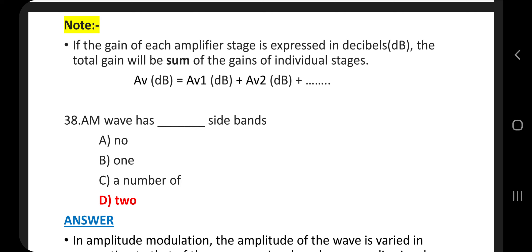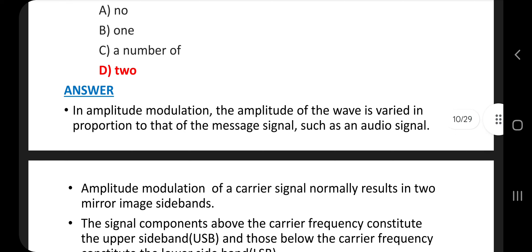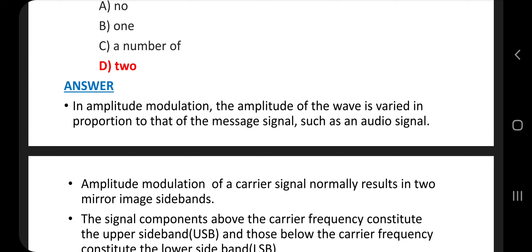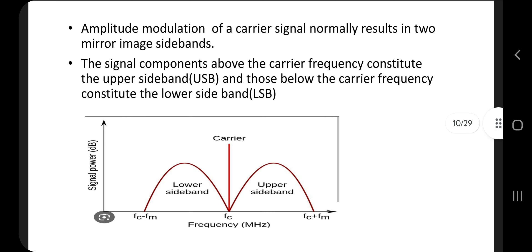Question 38. AM wave has dashed sidebands. Answer is option D, 2. In amplitude modulation, the amplitude of the wave is varied in proportion to that of the message signal, such as an audio signal. Amplitude modulation of a carrier signal normally results in two mirror image sidebands. The signal components above the carrier frequency constitute the upper sideband and those below the carrier frequency constitute the lower sideband. The limits of upper sideband is FC plus FM and the limit of lower sideband is FC minus FM.